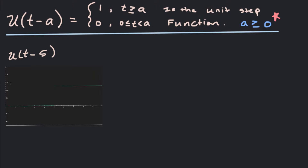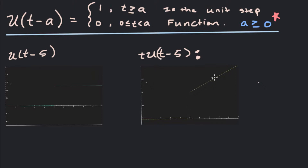If we look at another unit step function, like t·u(t-5), this function is 0 until we get to t equals 5, and then it jumps up to the function y equals t. Normally y equals t would extend all the way down to the origin, but it's not really there until t equals 5. The unit step function acts like a turn-on switch, turning on y equals t at time t equals 5, so it's like y equals t for t greater than or equal to 5.